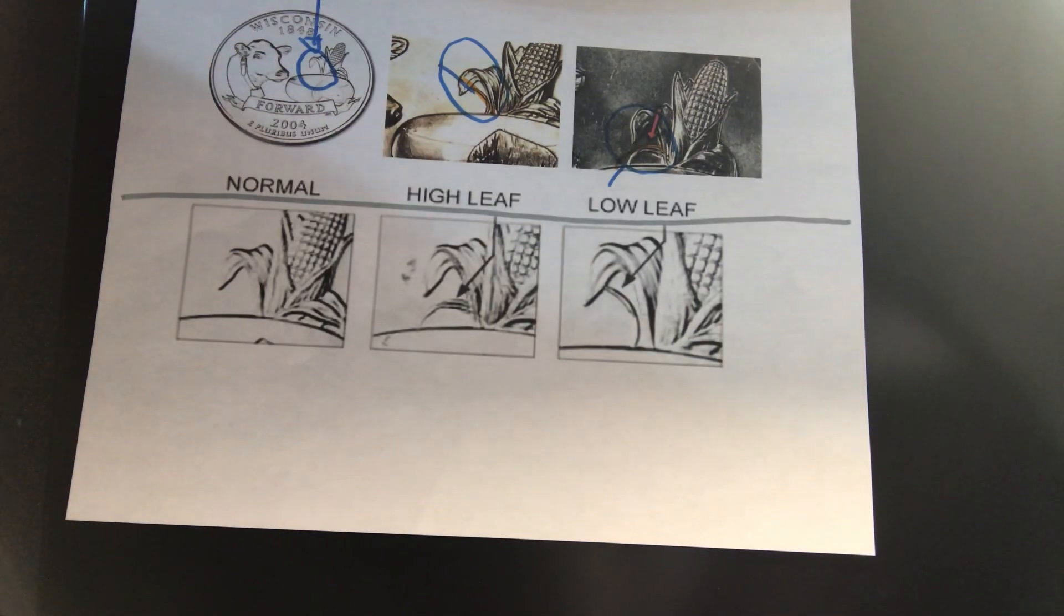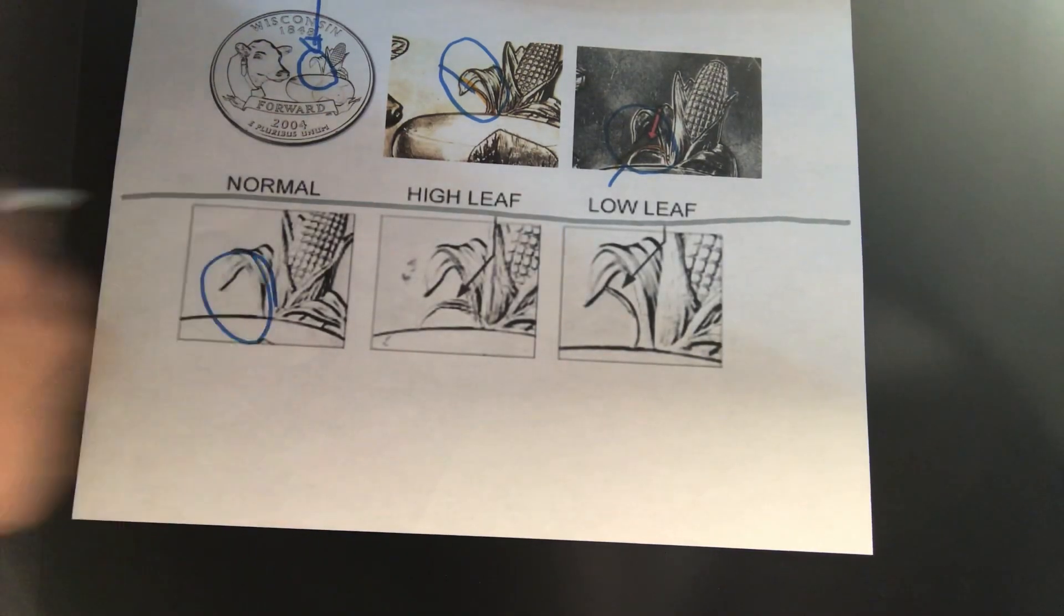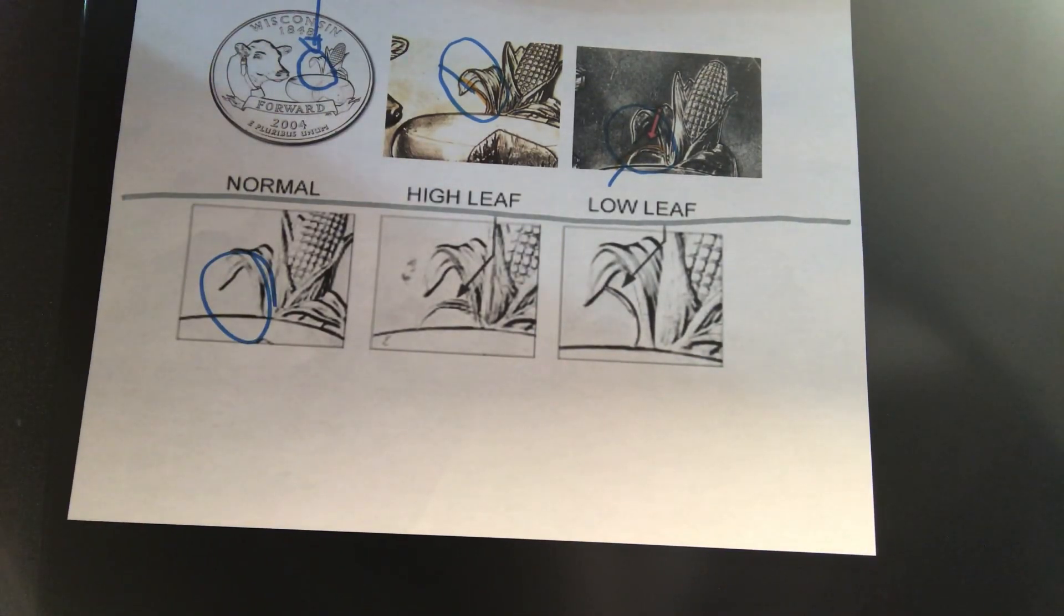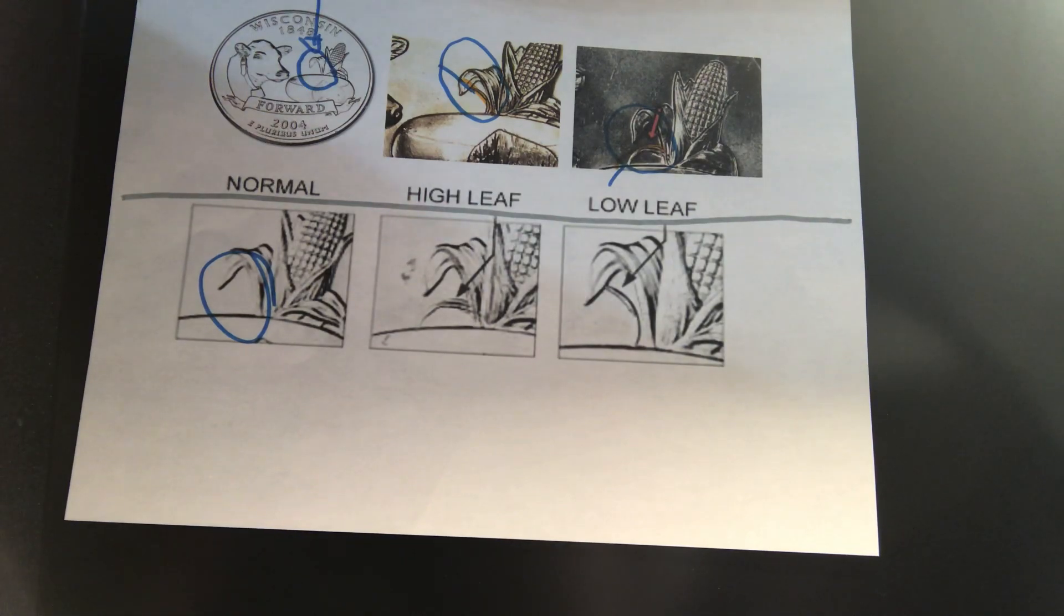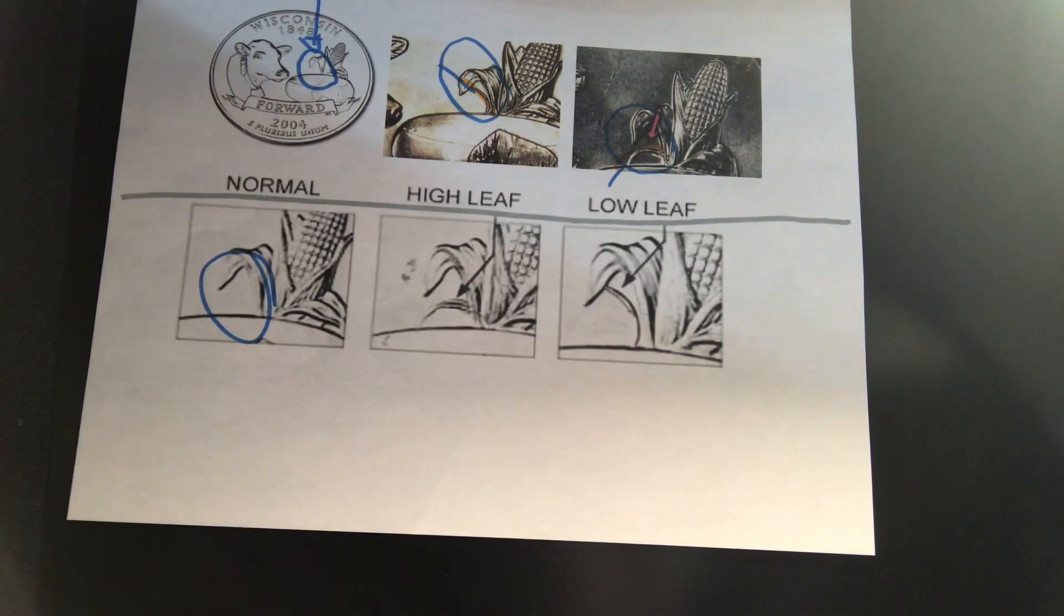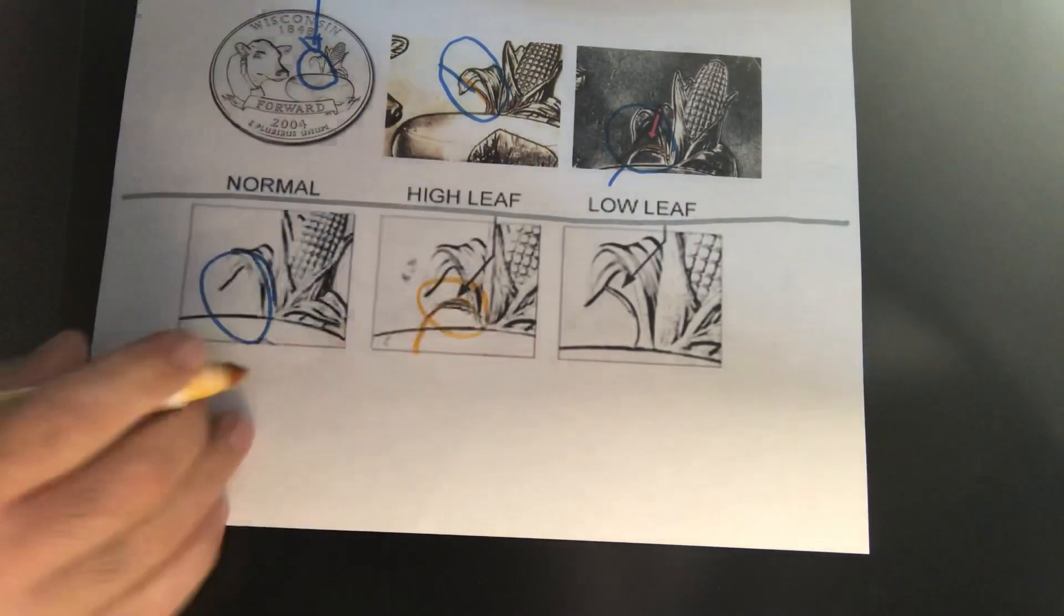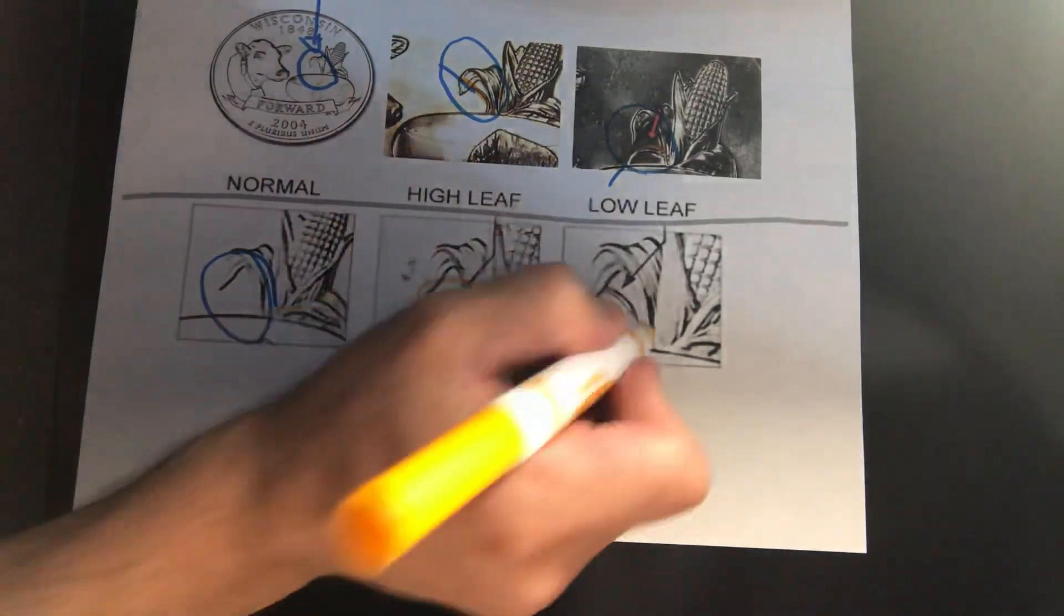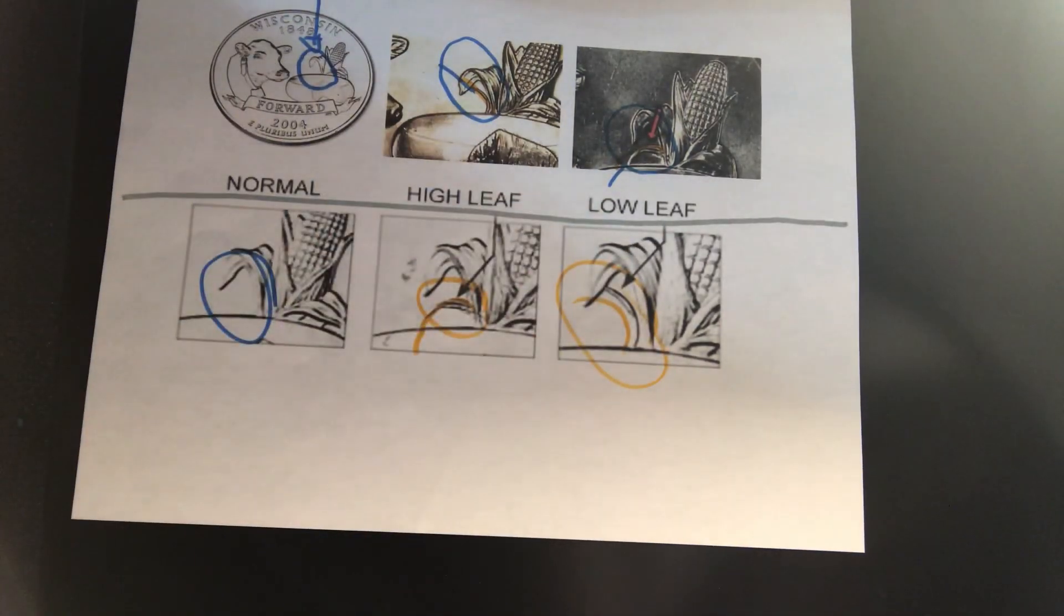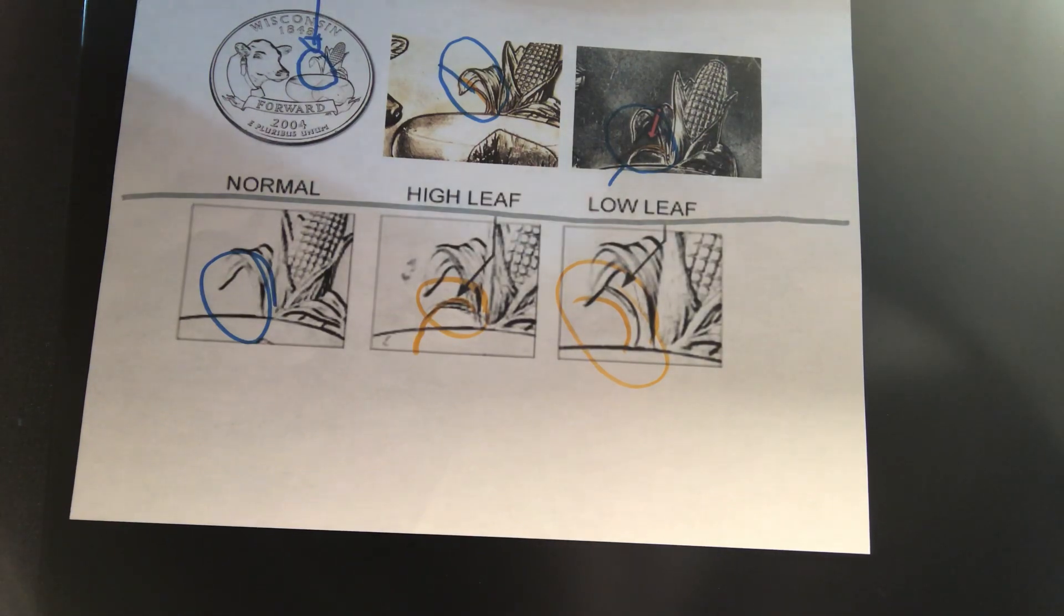To simplify, the normal one has just one leaf. And if you see an extra leaf, if it points down, it will be the lower leaf. And if it points up, it will be the higher leaf. And the higher leaf has more premium on it because it's harder to find.